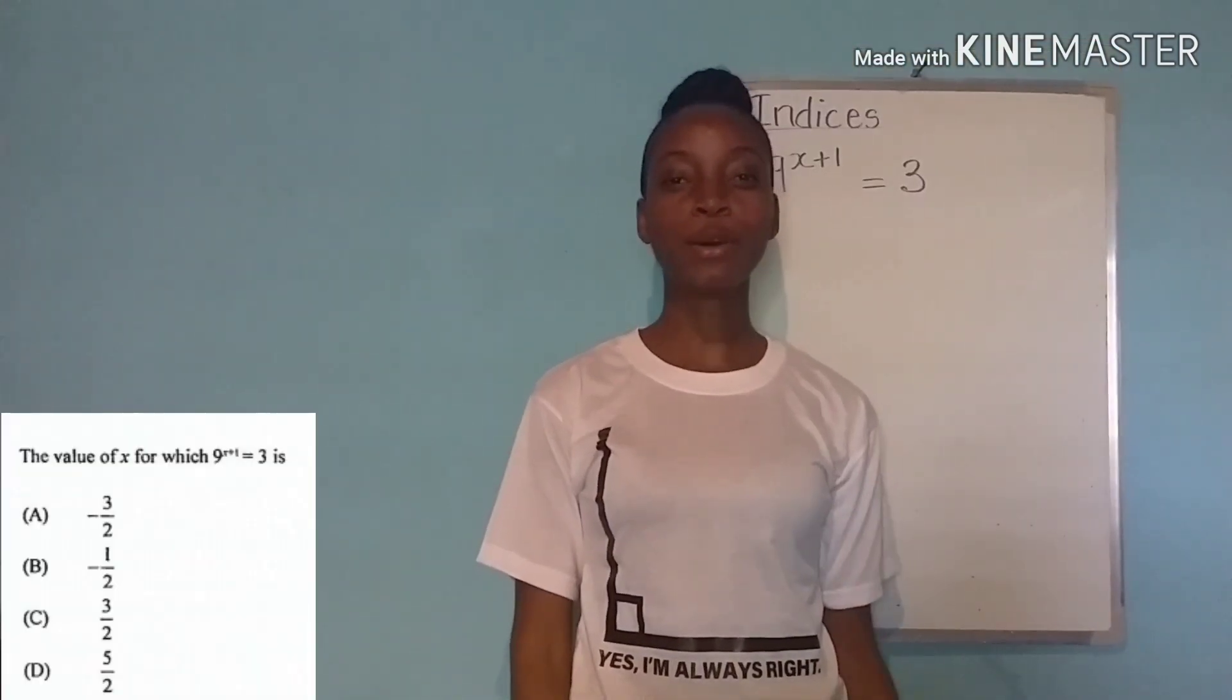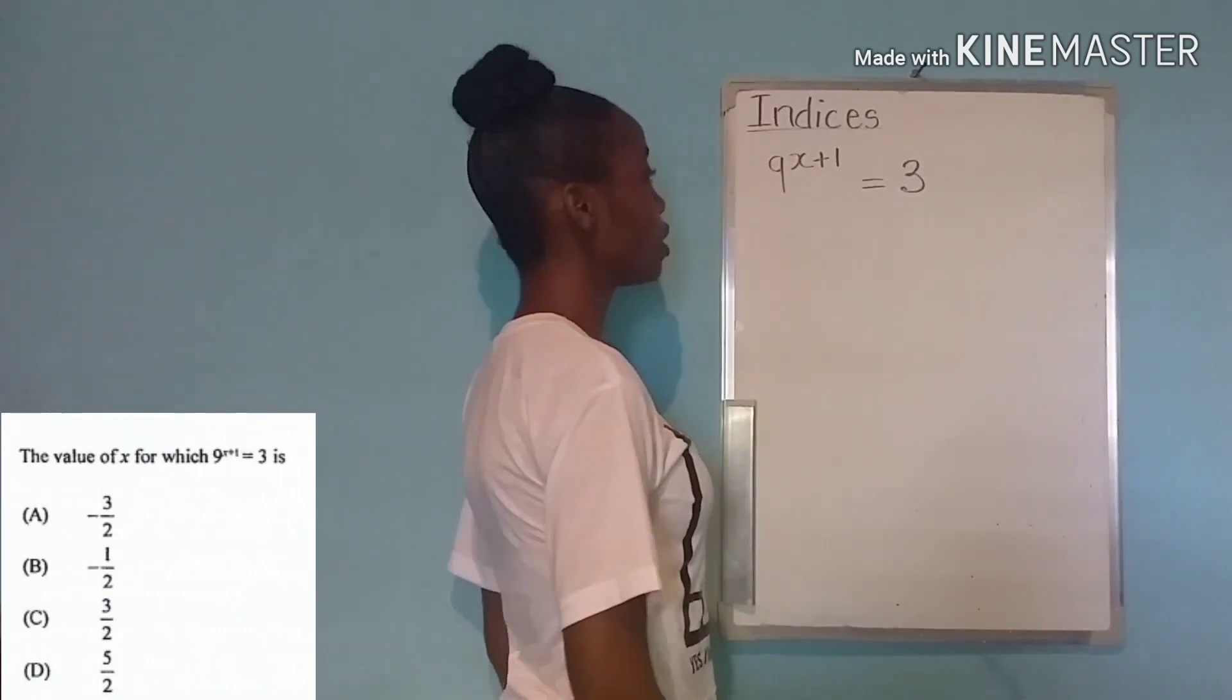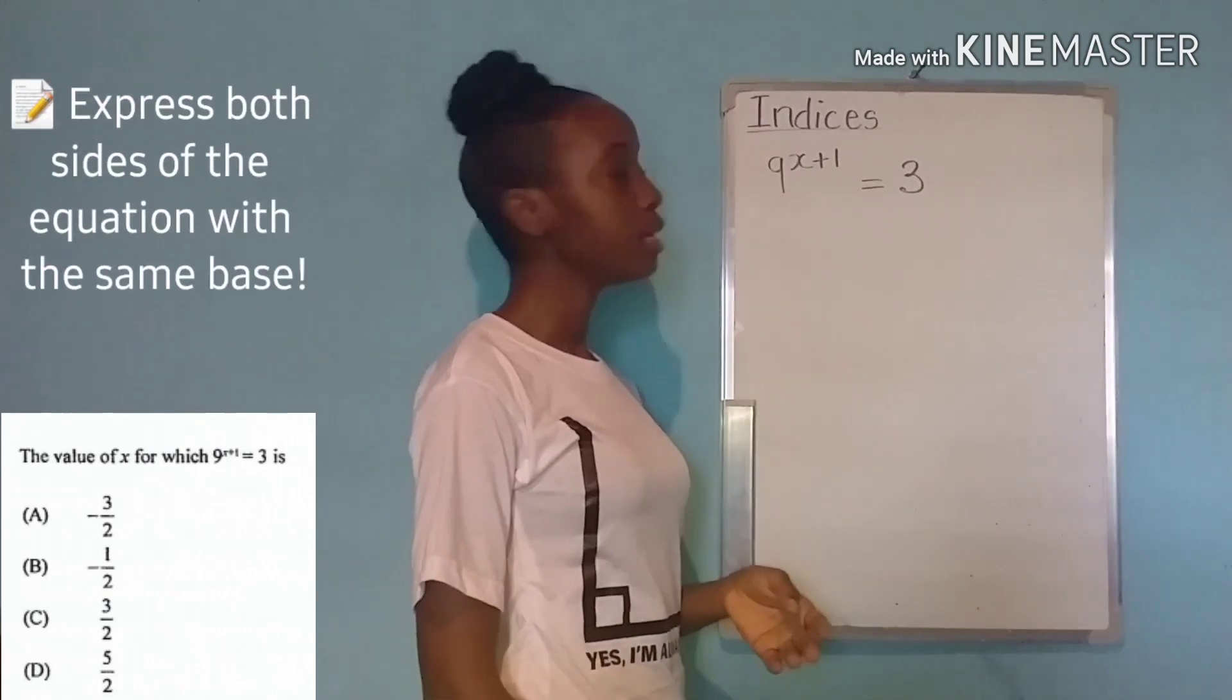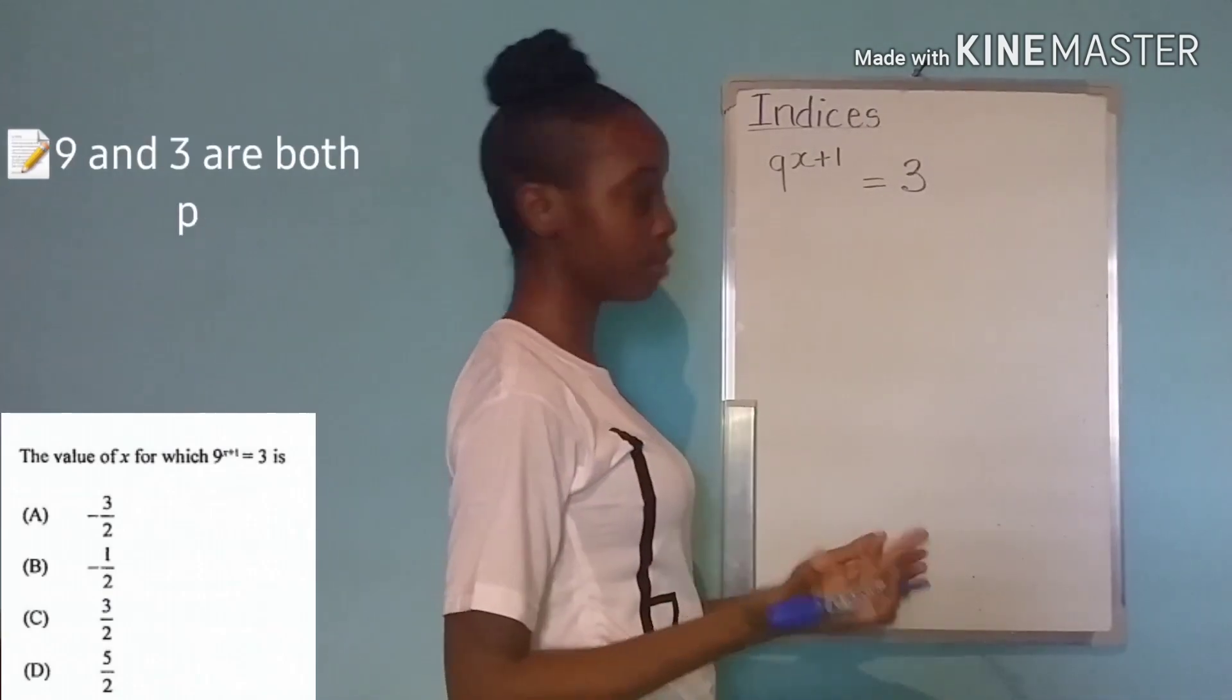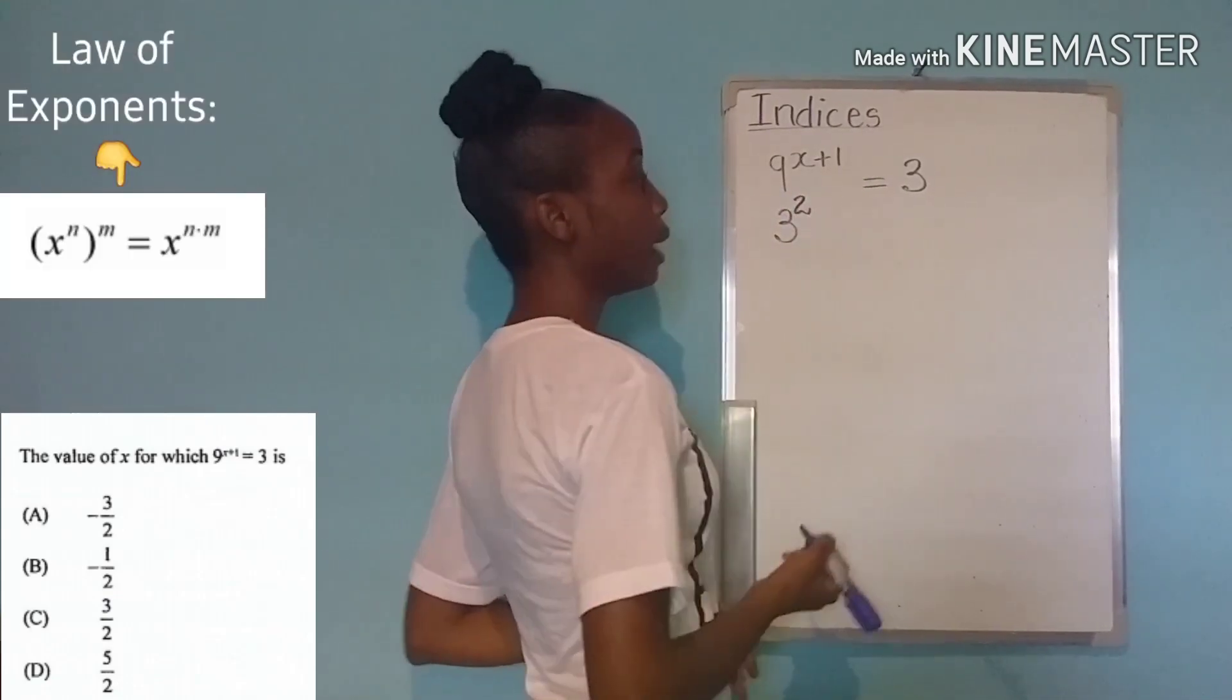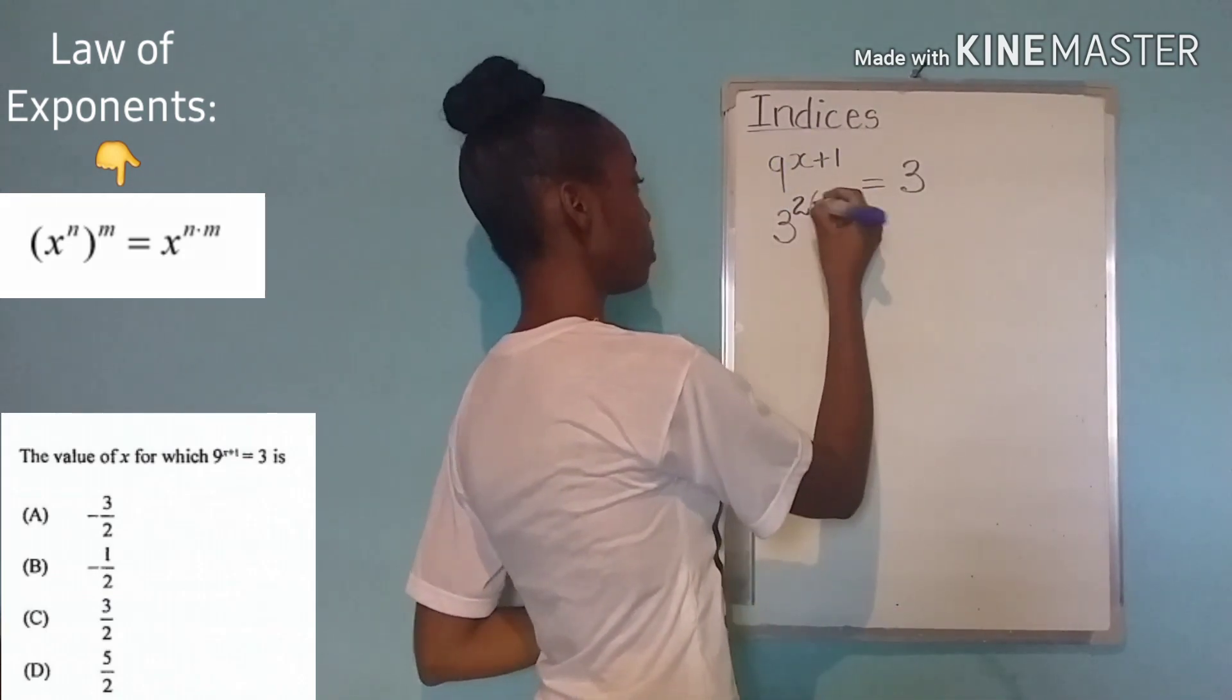All right so here's our first question and you can take a look at the exact question on your screen. Now the first step in solving this question is to ensure that both sides have the same base. We can express nine and three as the same base which would be three. So in this case nine is three squared and if we have a power here and nine is also being raised to another power x plus one then both powers are multiplied.